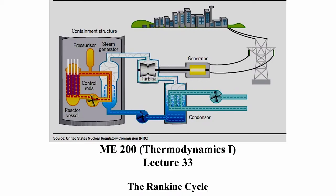The picture on the screen is a schematic of a typical very simple power plant using a Rankine cycle. Starting at the steam generator — shown here for a nuclear power plant — we have a working fluid like water. In the boiler, also known as a steam generator or vaporizer, heat is added to the fluid via heat transfer. Here it's done via nuclear fuel, which heats a working fluid that's pumped around.